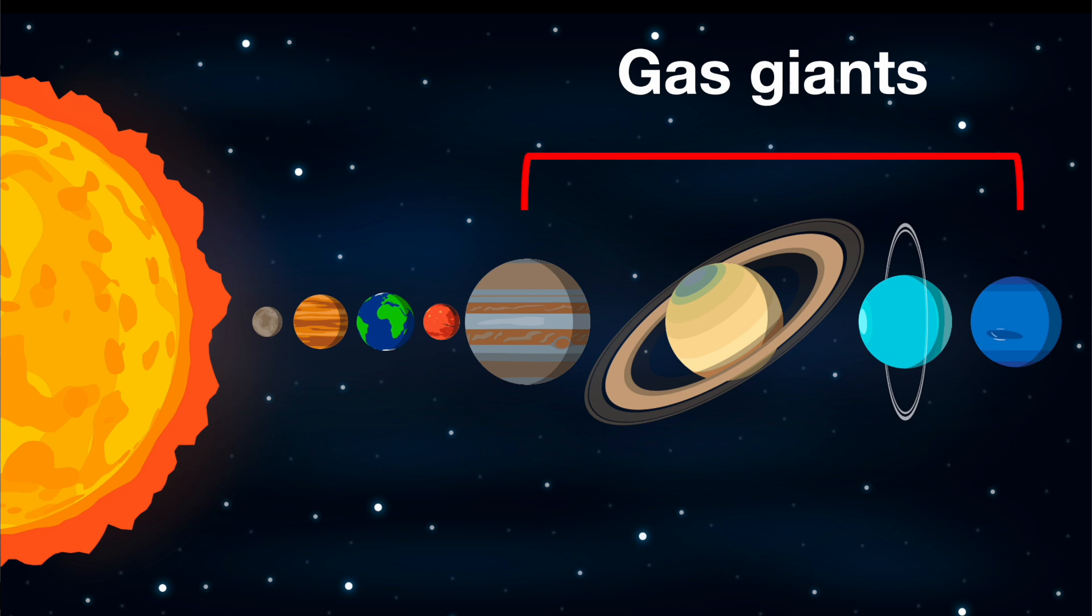The gas giants in our solar system are Jupiter, Saturn, Uranus and Neptune. All gas giants have a system of rings surrounding them. The most visible are those around Saturn.